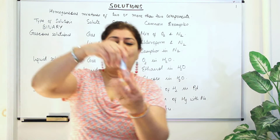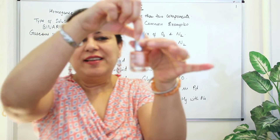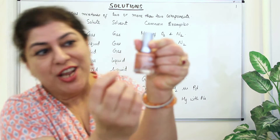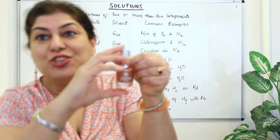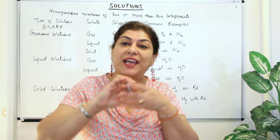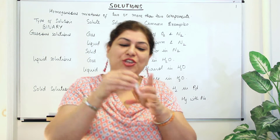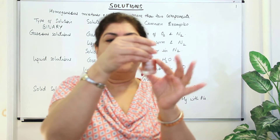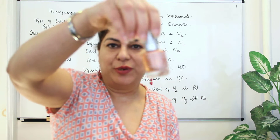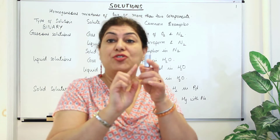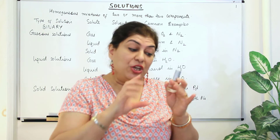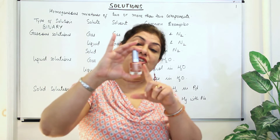Another example of a colloid is nail polish. There are glittery particles in nail polish that settle at the bottom, which is why we shake the bottle before use. Nail polish is actually opaque because of the coloured pigments and particles present in it. So nail polish is also a colloid — it is heterogeneous but appears homogeneous.